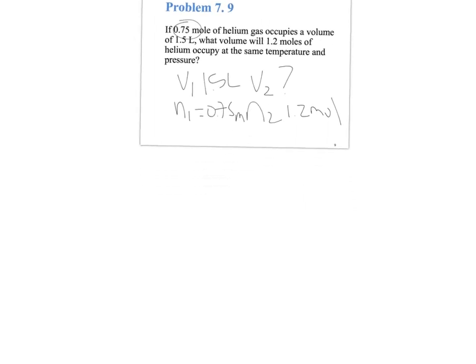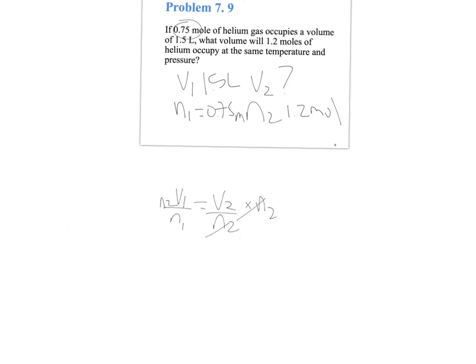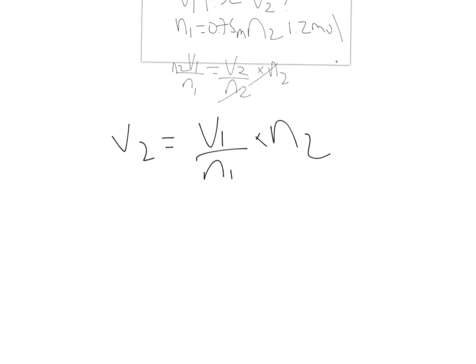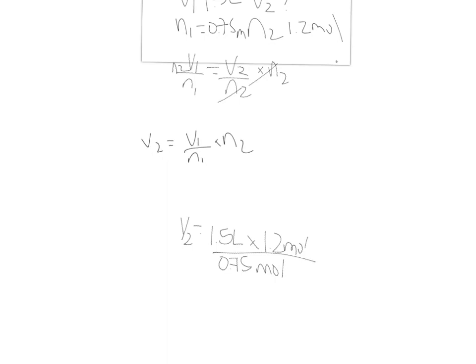So, what we're going to do now is use our equation. V1 over N1 equals V2 over N2. We're going to solve for V2. So, we multiply here, here they cancel out, and then we end up with V2 is equal to V1 over N1 times N2. We substitute our values there and we got V2 is equal to 1.5 liters times 1.2 moles over 0.75 moles. We do the calculations and we end up with V2 equals to 2.4 liters.